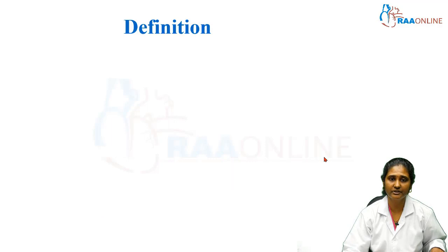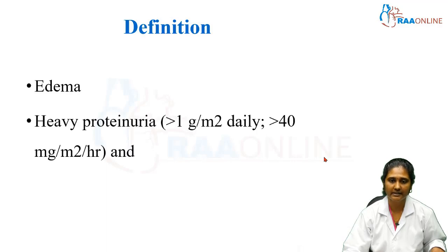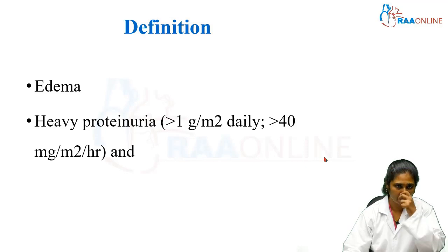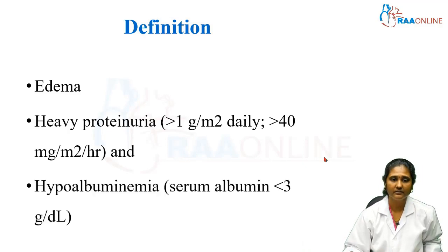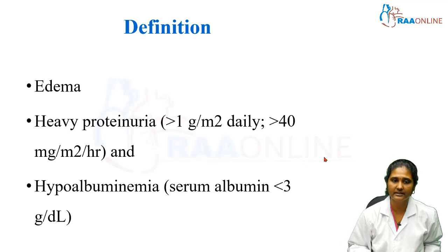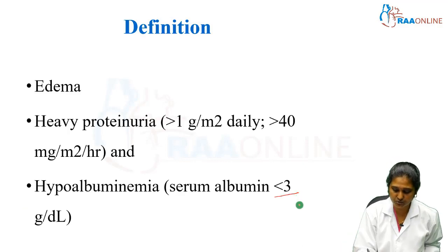Nephrotic syndrome by definition is a triad of clinical findings. The first one is edema, and the second is heavy proteinuria — that is more than 1 gram per meter square daily or more than 40 milligram per meter square per hour — and hypoalbuminemia, which is serum albumin less than 3 grams per deciliter. In the previous guidelines, it was given as 2.5 grams per deciliter.